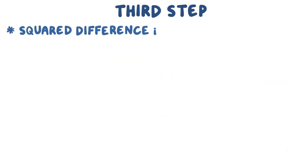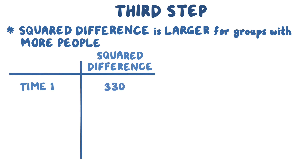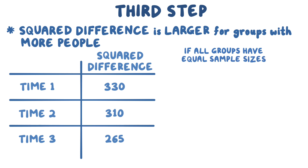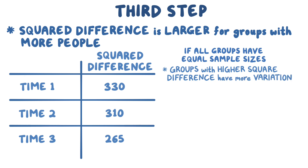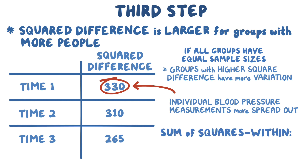The squared difference is larger for groups with more people, so let's say the squared difference of the time one group is actually 330, and for the time two and time three groups it's 310 and 265 respectively. Groups with higher squared differences, like time one, have more variation than groups with lower squared differences, like time three — meaning individual blood pressure measurements in time one are more spread out. To get the SSW, we add all squared differences: 330 plus 310 plus 265 equals 905.